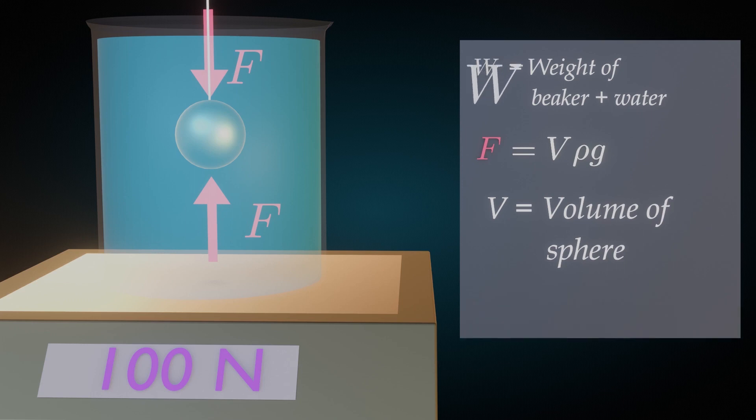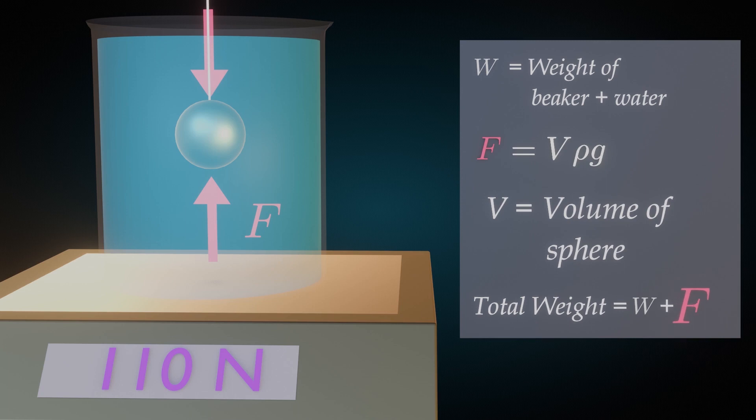Hence, the total weight or downward force will be W plus F. Therefore, the scale reading will increase by an amount equal to the buoyant force.